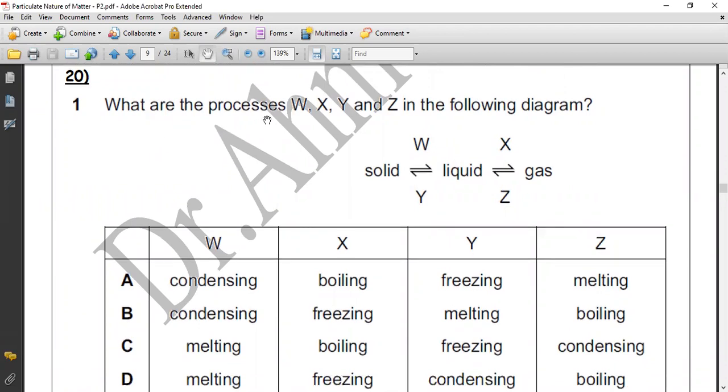Question 20. What are the processes W, X, Y, and Z in the following diagram? Let's name it: conversion of solid to liquid is melting. Conversion of liquid to gas: boiling. Conversion of gas to liquid, reverse of boiling: condensing, condensation. Conversion of liquid to solid: freezing. So the correct answer is...